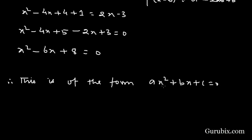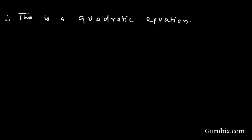This is the standard form of a quadratic equation. The final equation x² - 6x + 8 = 0 is of the form ax² + bx + c = 0. Therefore, this is a quadratic equation. Let us move to the second part.